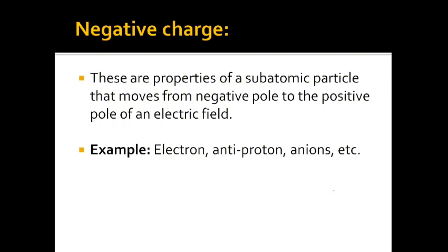Now, negative charges — these are properties of particles that move from the negative pole to the positive pole in an electric field. Any particle that moves from the negative pole to the positive pole in an electric field is considered negatively charged. Examples include electrons, anti-protons, and anions. Anions are bodies that gained electrons, so they are negatively charged.